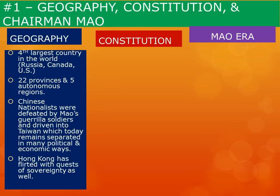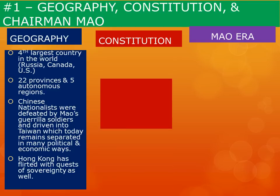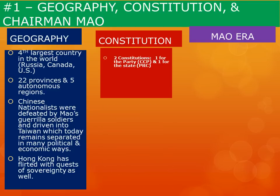The Chinese nationalists were pushed off to the island of Taiwan when they were defeated by Mao's guerrilla soldiers. Taiwan has remained a separate governing body from the PRC to this day. Hong Kong is also a very important city economically for China, but it has flirted with the idea of becoming its own sovereign city in recent decades.